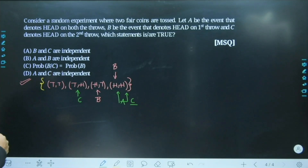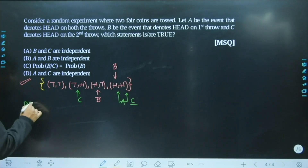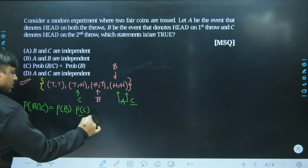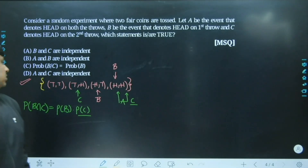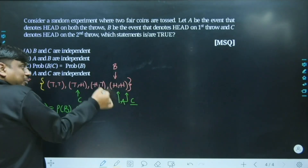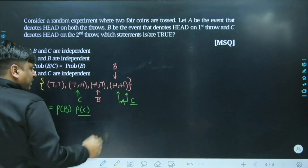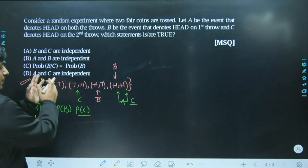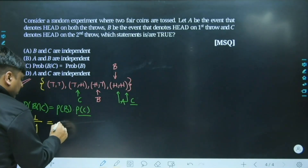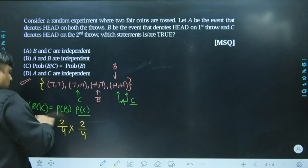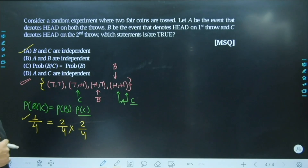The first statement: B and C are independent events. For independence, P(B ∩ C) must equal P(B) × P(C). The event B ∩ C is {HH}, which has probability 1/4. P(B) = 2/4 = 1/2 and P(C) = 2/4 = 1/2. So P(B) × P(C) = 1/2 × 1/2 = 1/4. Since left-hand side equals right-hand side, B and C are indeed independent — this statement is satisfied.